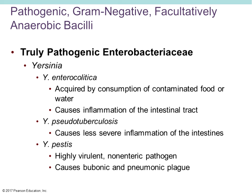The three species are Yersinia enterocolitica, Yersinia pseudotuberculosis, and Yersinia pestis. Yersinia pestis is the one known as the Black Plague or Bubonic Plague — the most virulent and most problematic of the three. Yersinia enterocolitica is acquired by consumption of contaminated food or water and causes inflammation of the intestinal tract, usually self-limiting. Yersinia pseudotuberculosis causes a less severe inflammation of the intestines. Yersinia pestis is a non-enteric pathogenic bacteria that causes both Bubonic and Pneumonic Plague.